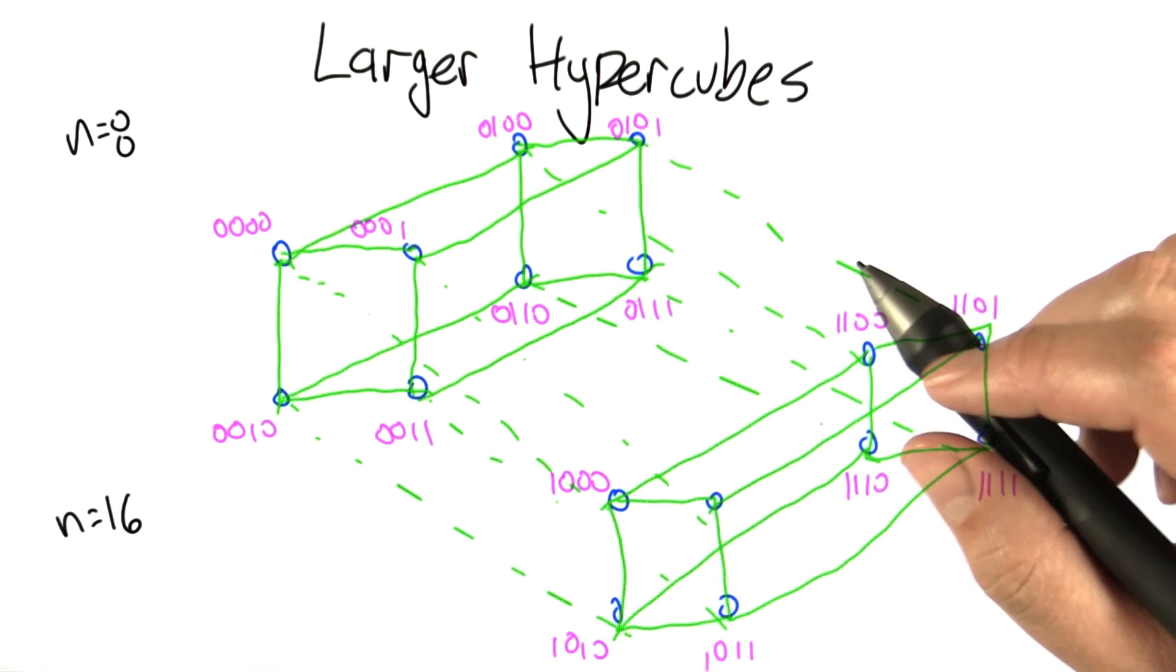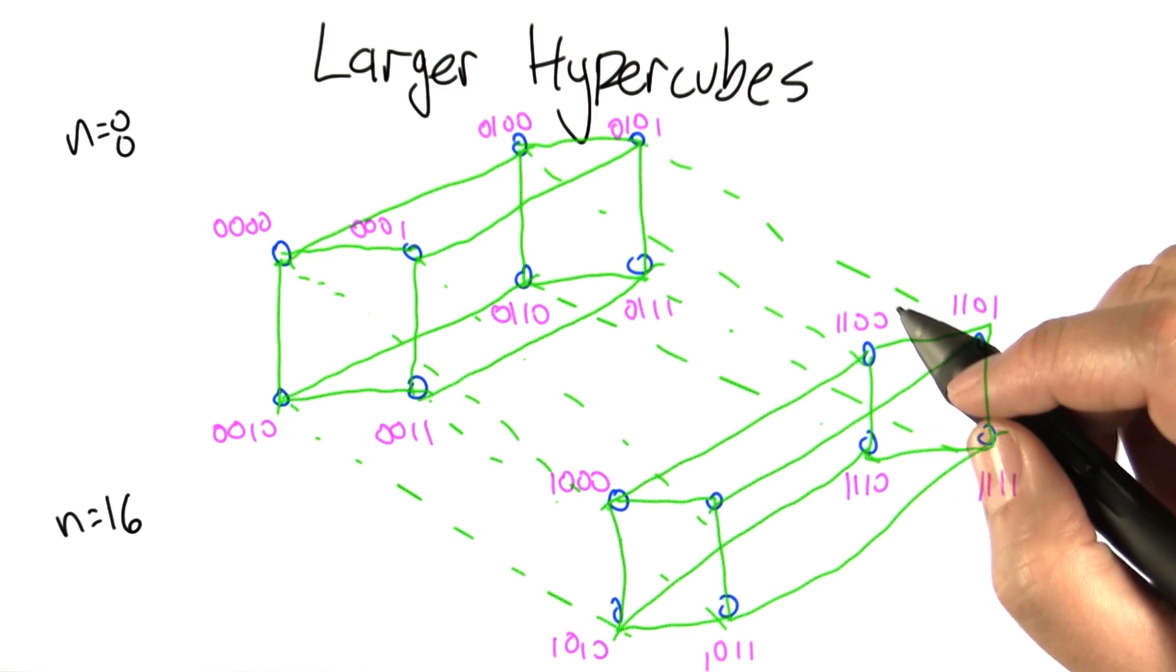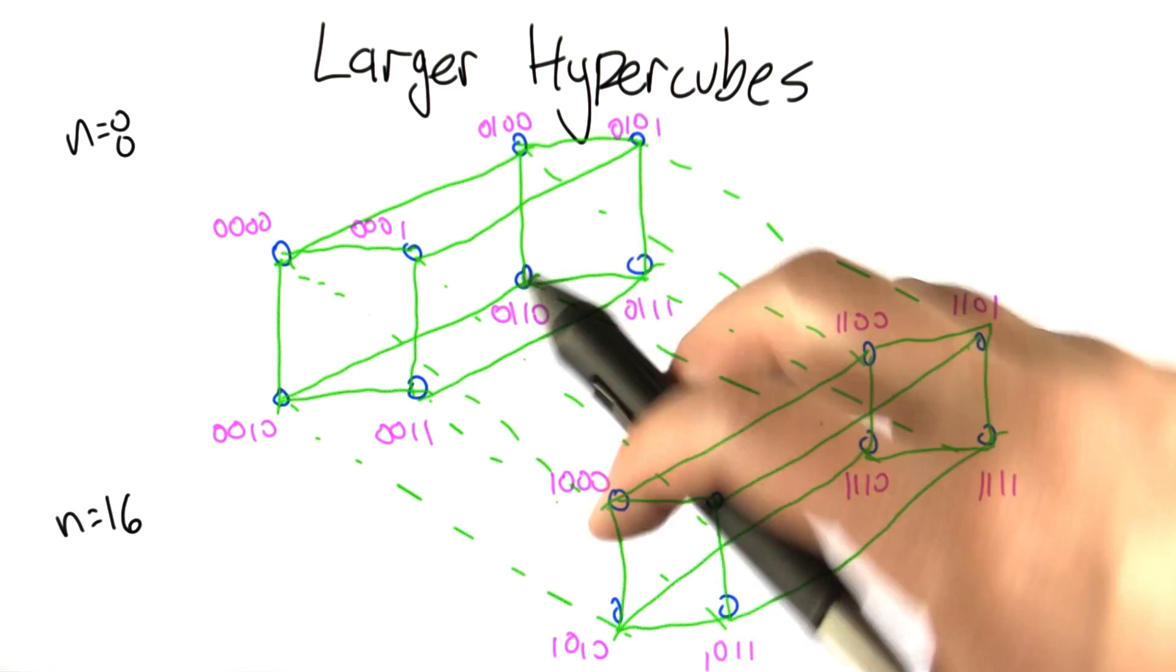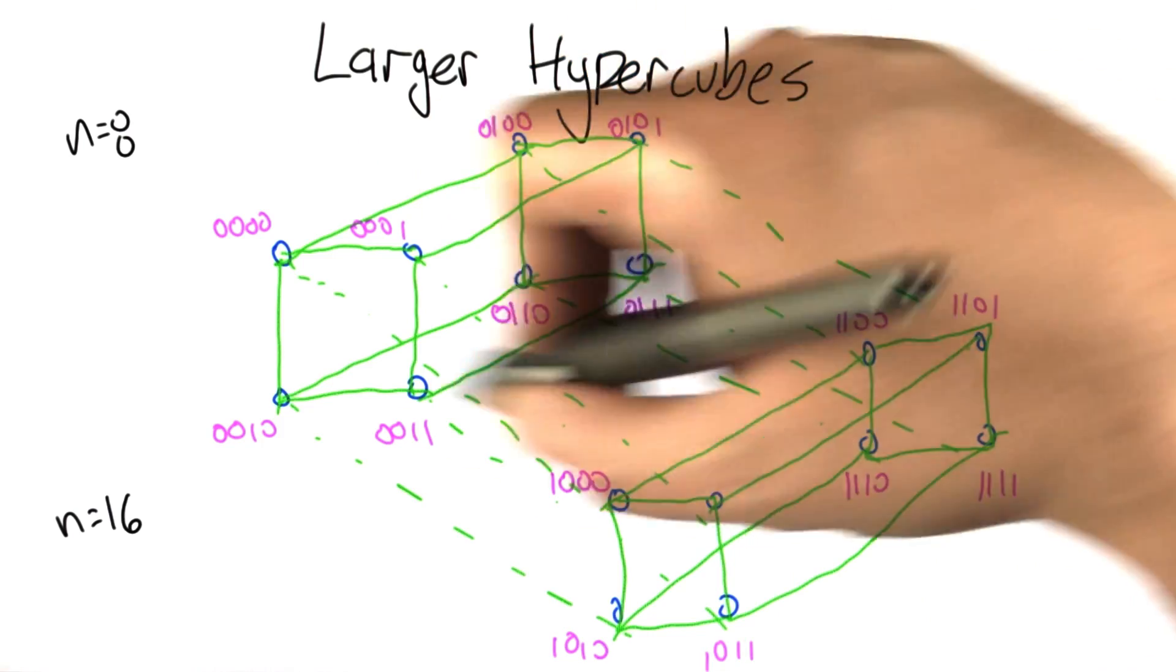We can keep extending this over and over again: 5-bit patterns, 6-bit patterns, 7-bit patterns. And each time what we're doing is connecting two hypercubes of the previous size, extending them and then connecting the corresponding vertices.